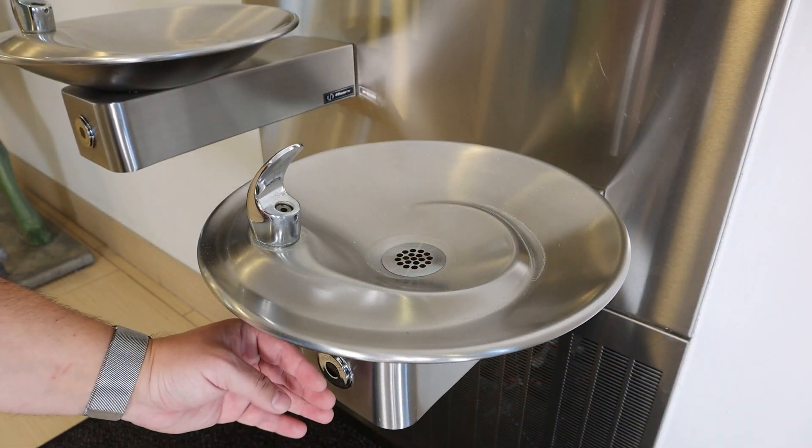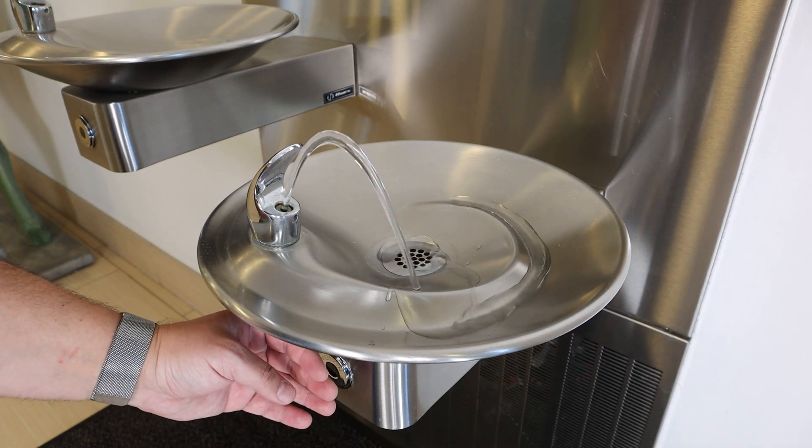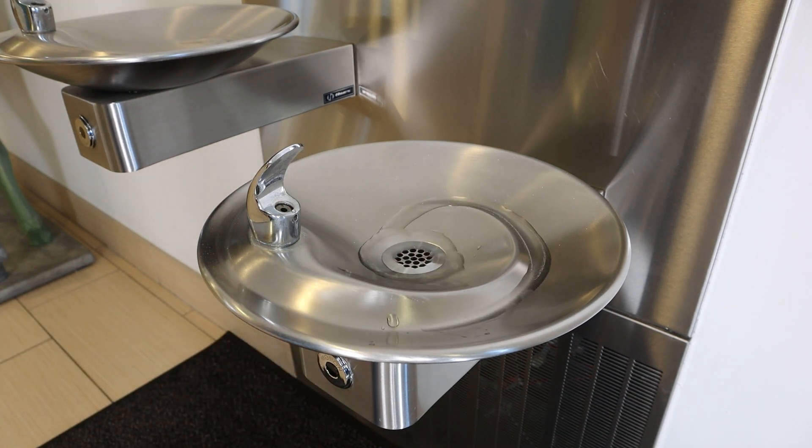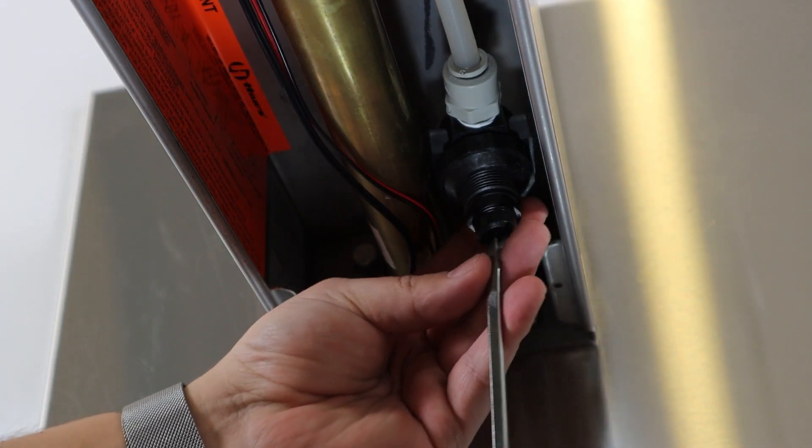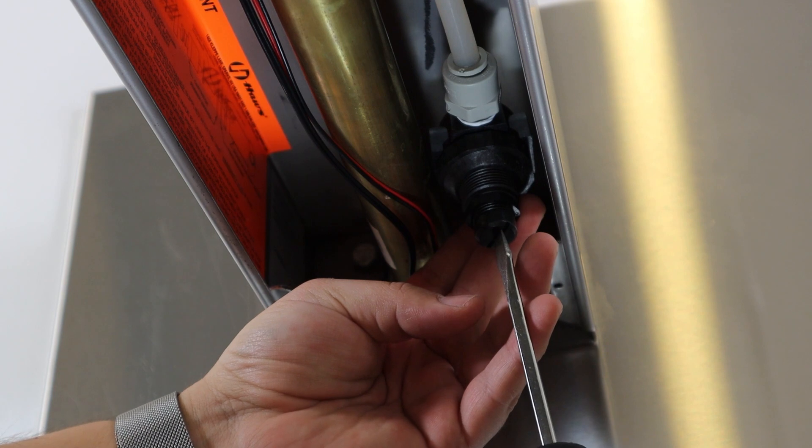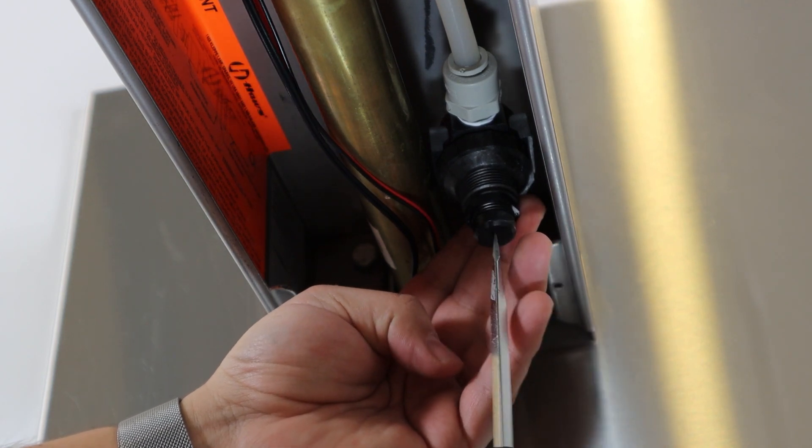You may now activate the sensor and make any adjustments that may be needed to the solenoid valve and stream height. Using a flathead, turn the regulator clockwise to increase flow and counterclockwise to decrease flow.